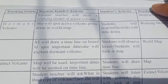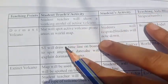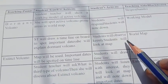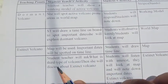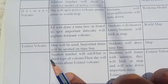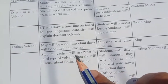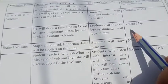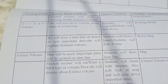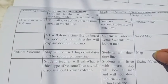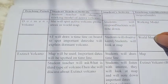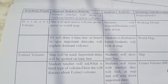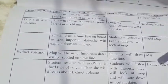The teacher will explain the dormant volcano and the extinct volcano to the students. For the teaching aid, you will have to use a map — here you can see the world map.